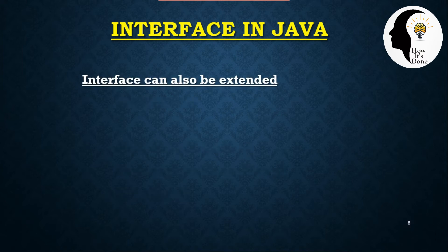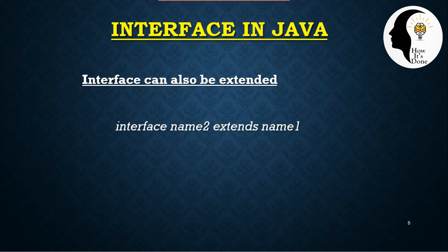The interface can also be extended. If we use inheritance, we can use the extends keyword — that means we can extend one interface from another. For example: interface Name2 extends Name1. Here Name1 is the parent interface and Name2 is the child interface. We can use inheritance in the same way.